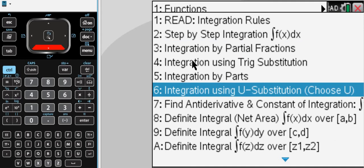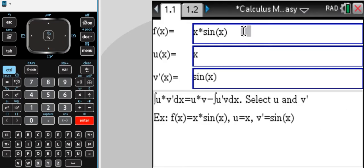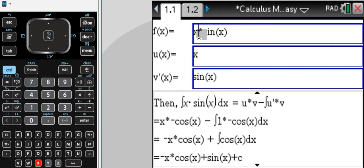If you know the integration method that you would like to use, such as integration by parts, you can just enter your given function up here, x times sine of x, and assign immediately what u and v' would have to be in order to perform the integration by parts method.